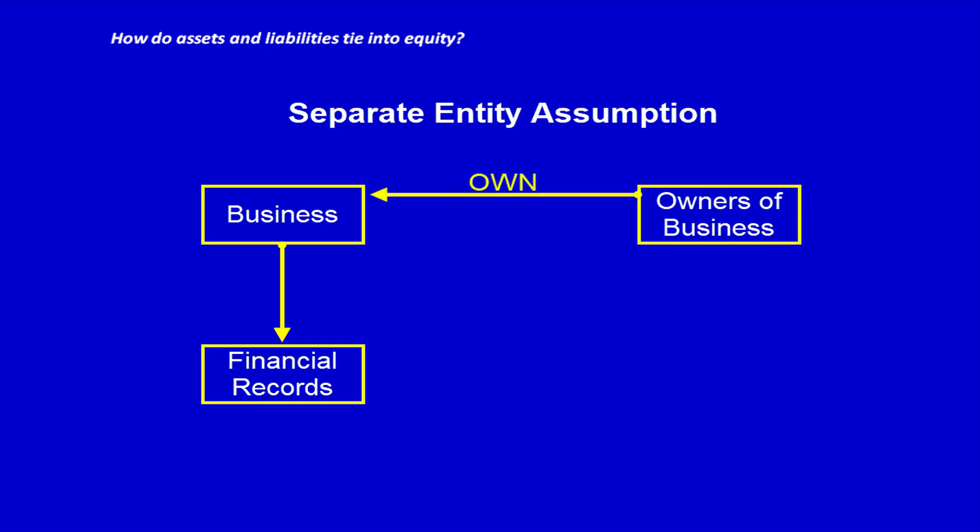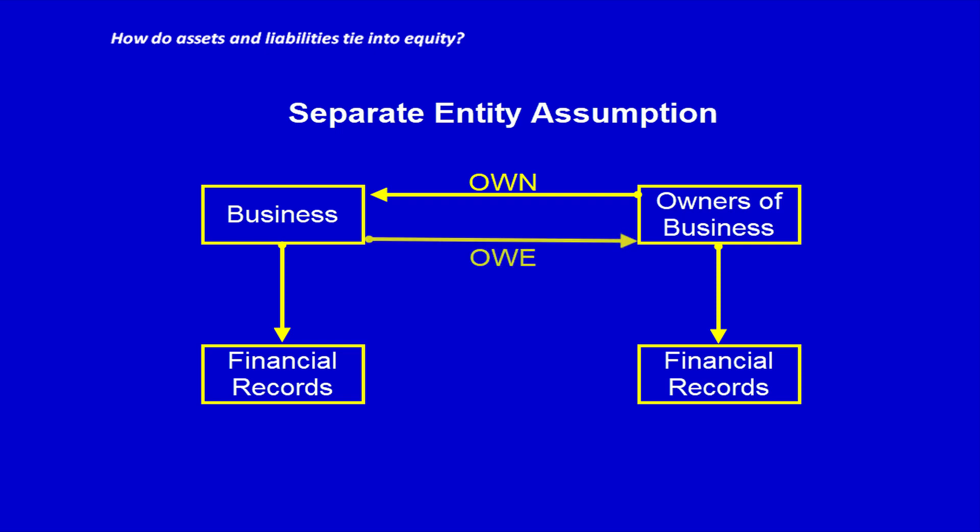Even though the owners own the business, the business has its own financial records totally separate from the owner's financial records. Because a business is a separate entity, the wealth that a business has is owed to the owners by the business. Note that this is from the business's point of view.